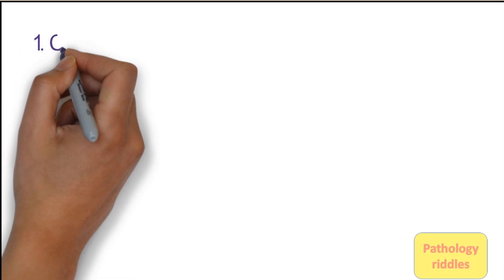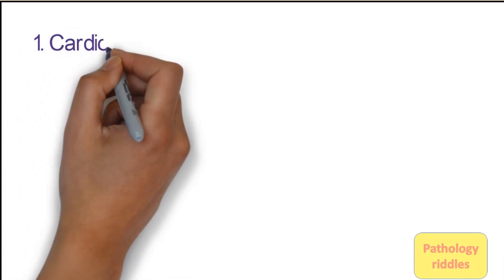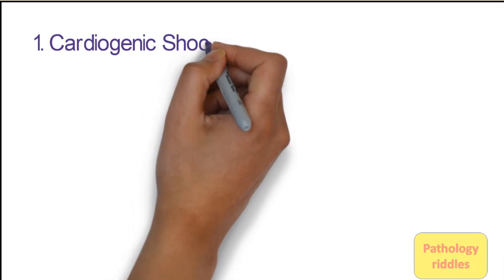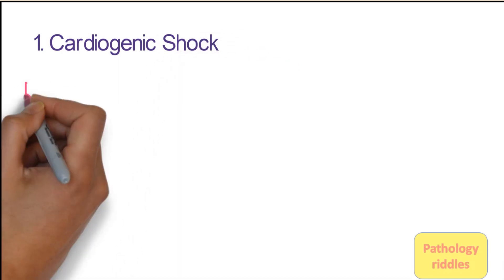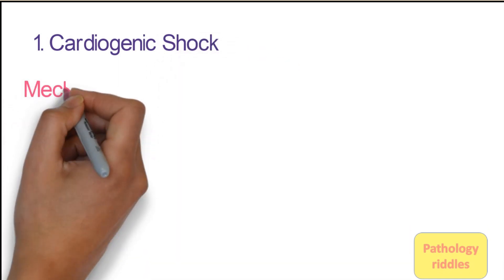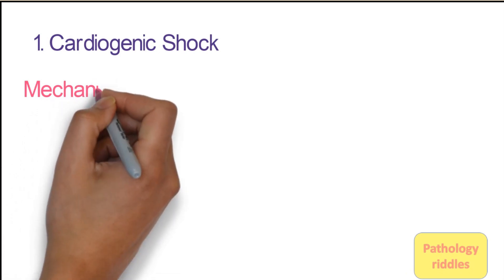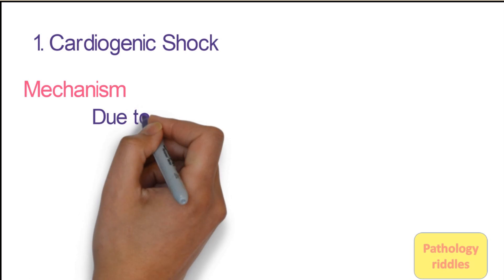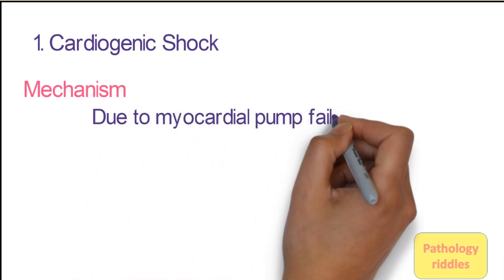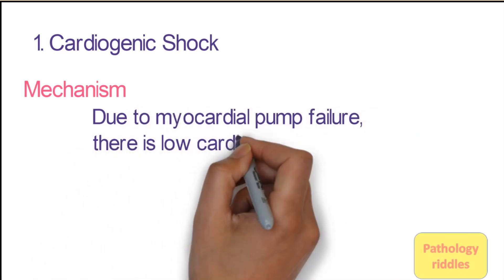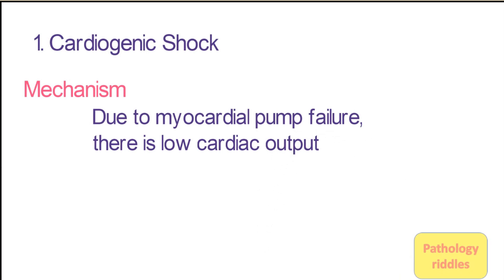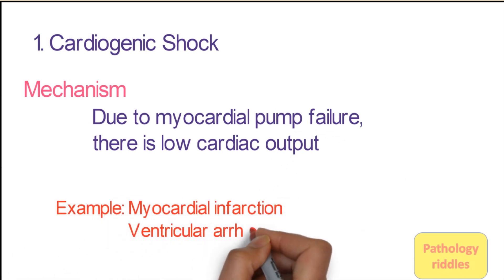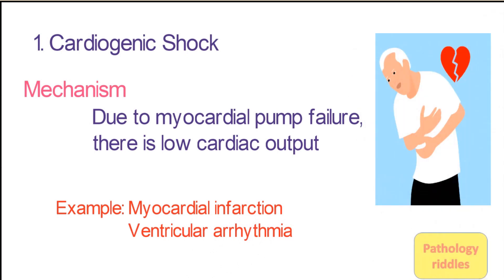The types of shock are based on cause. The first one is cardiogenic shock, which happens because of myocardial pump failure — the heart is not able to pump enough blood out. The causes of myocardial pump failure include myocardial infarction, ventricular arrhythmias, and many other diseases affecting the heart.